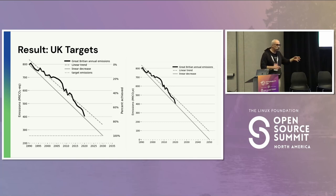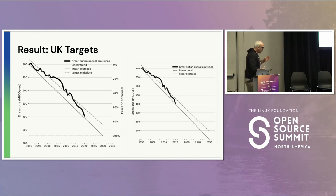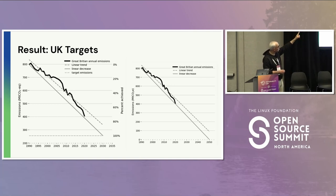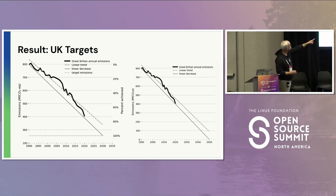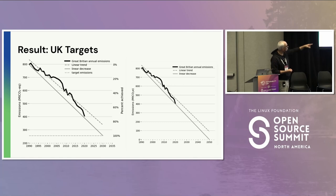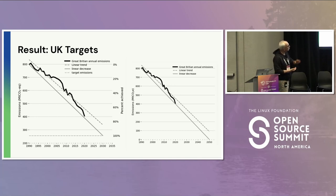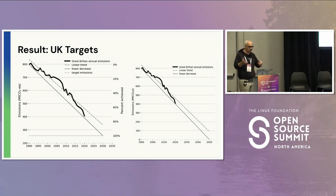Another thing we can do, because we're including targets and emissions from different areas, is look at how well different actors are actually achieving what they say they're going to achieve. We see here Great Britain's target of getting to 250 megatons of CO2 equivalent by 2030 — they're not on track to hit it. And the UK also has a 2050 net zero target they're not on track to hit either. We can do that for actors of all different kinds — cities, countries, and corporates.